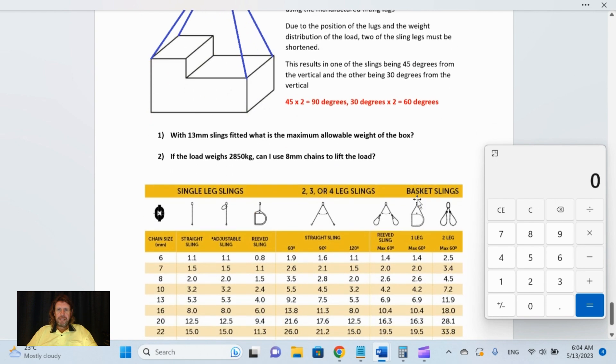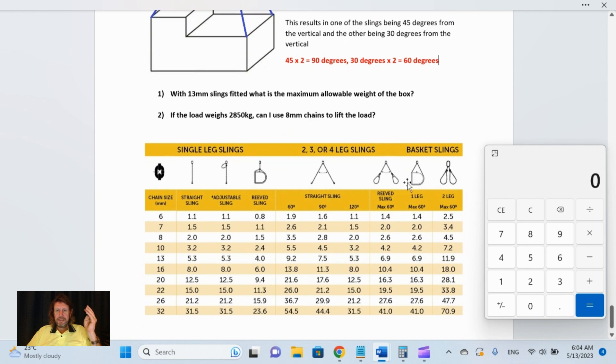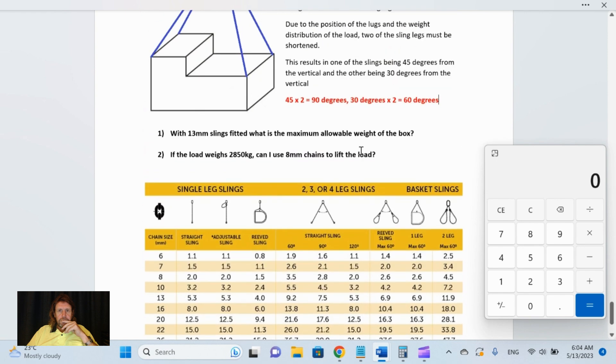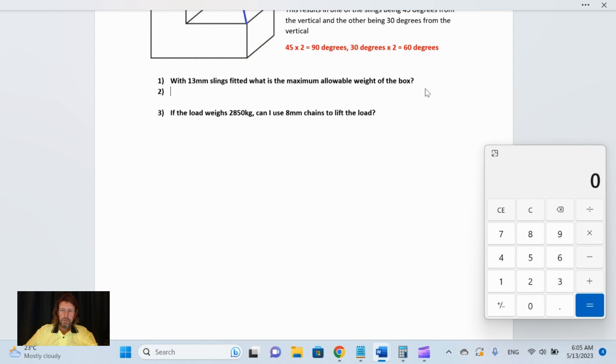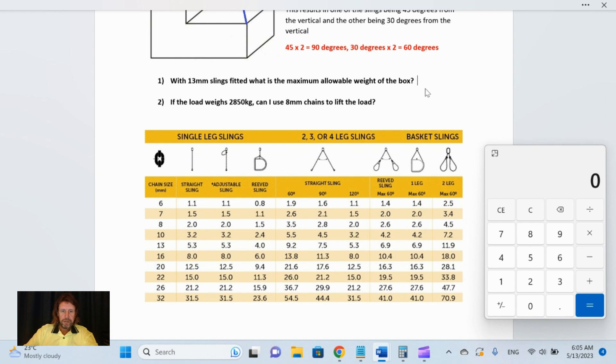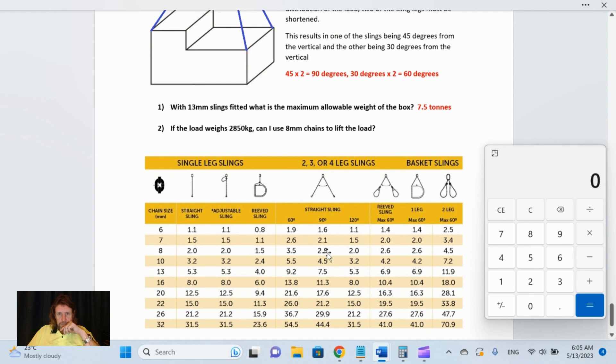With 13 millimeter slings, what is the maximum allowable weight of the box? We've got a direct load, they're not choked, so don't go to these choked basket slings down here. We've got 90 degrees. Here we go down, and we're looking for 13 millimeter slings. On a 90 degree means that we can lift 7.5 tons. So 13 millimeter slings, 90 degree included angle, and we go down to 7.5 because 13 millimeters on a straight lift there meets us there at 7.5.